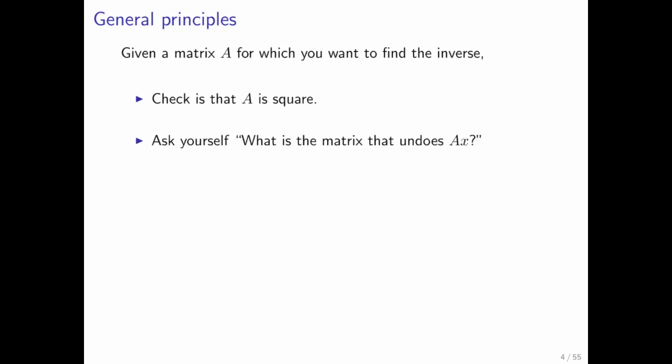The next thing you do is you ask yourself, what is the matrix that undoes A of x? After all, we know that whatever matrix you come up with has to have the property that it undoes what matrix A did. And sometimes, by just thinking about it, you can determine what that matrix is.